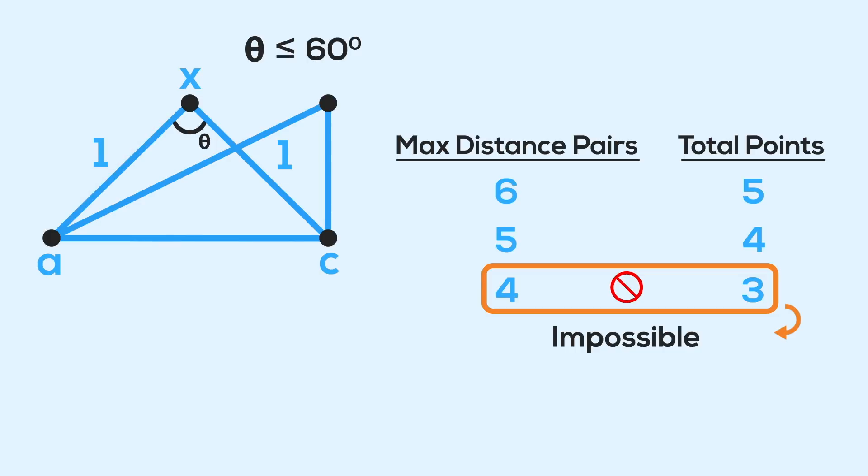So, we reach a contradiction, and the proof is done. If you have N points in a plane, the number of pairs that are a max distance away is going to be the same or less than that value of N.